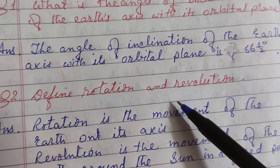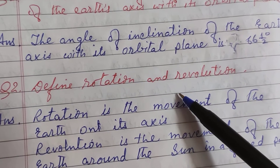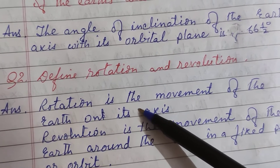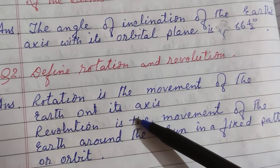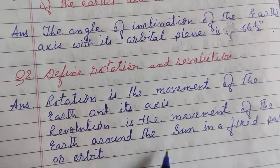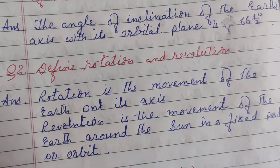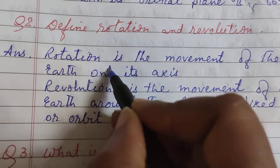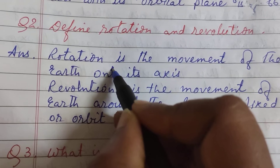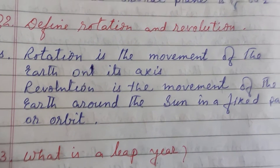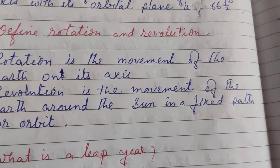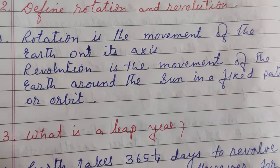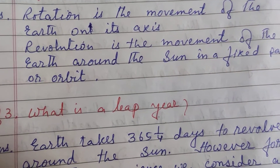Define rotation and revolution. Rotation is the movement of the Earth on its own axis. Revolution is the movement of the Earth around the Sun in a fixed path called an orbit.